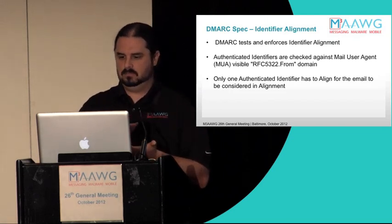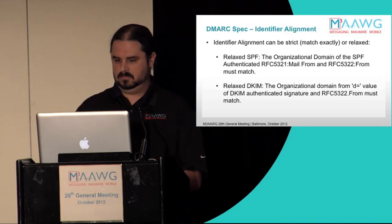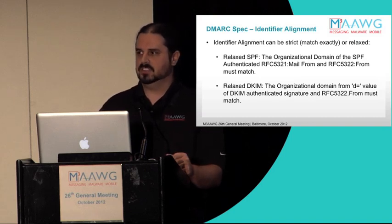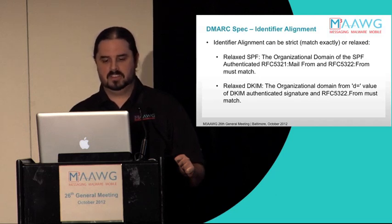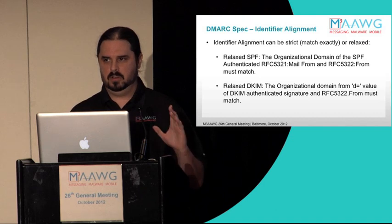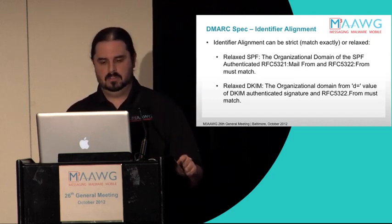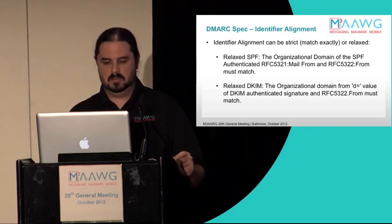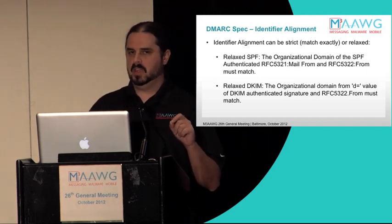Only one authenticated identifier has to align in order for the email to be considered in alignment. You have a couple of options when deploying your system for how strict or relaxed you want the alignment check to be. We have what's called relaxed, which is the default, meaning the organizational domain of — in SPF's case — the MAIL FROM has to match the organizational domain of the From header. And in the case of DKIM, the organizational domain of the D= value in the DKIM signature header has to match the domain in the From header.